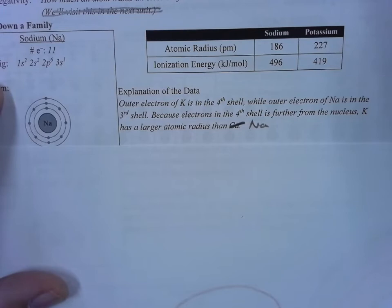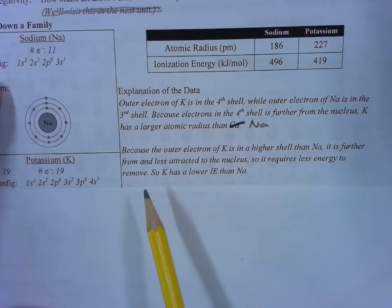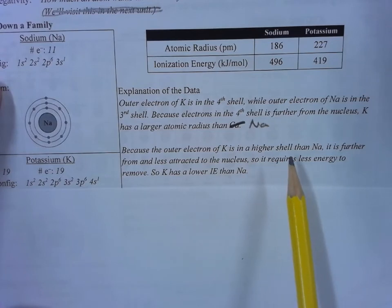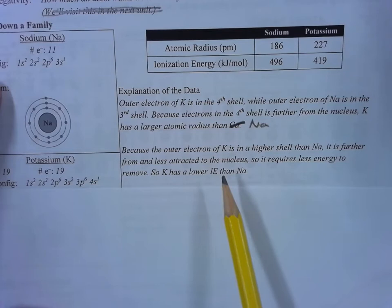Because the outer electron of K is in a higher shell than Na, it is further from and less attracted to the nucleus. So it requires less energy to remove. So K has a lower ionization energy than sodium.